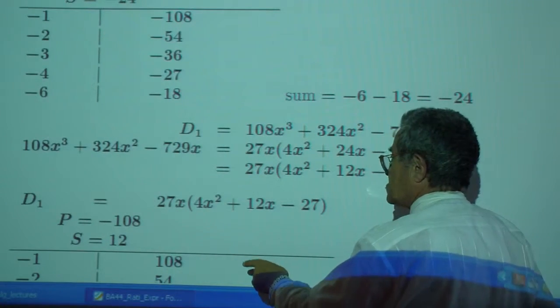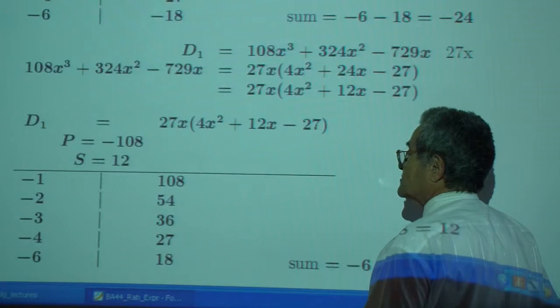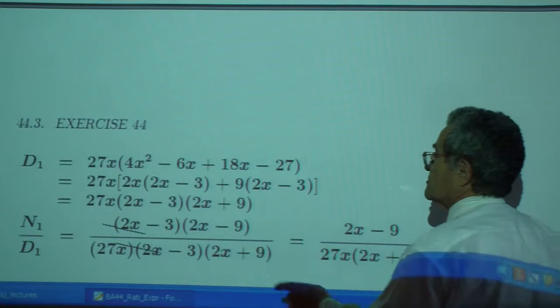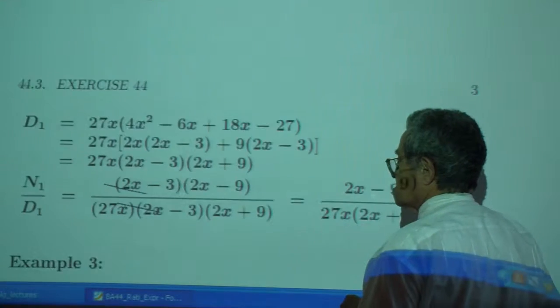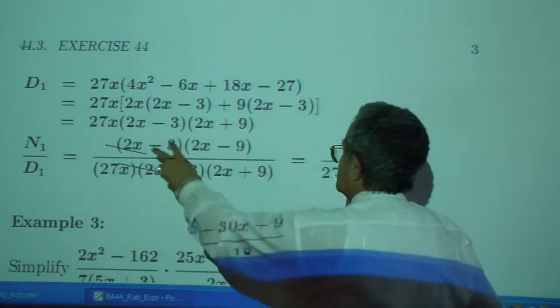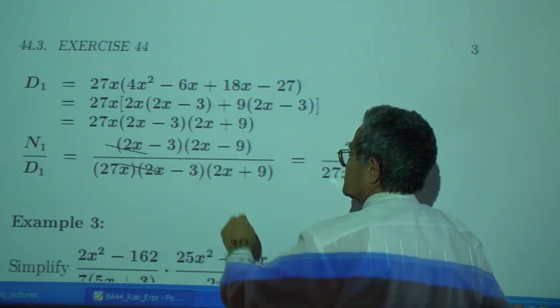And then the denominator now, factor out the greatest common factor, use product sum. And that is your denominator right here. So, what goes out? 2x minus 3 and 2x minus 3.